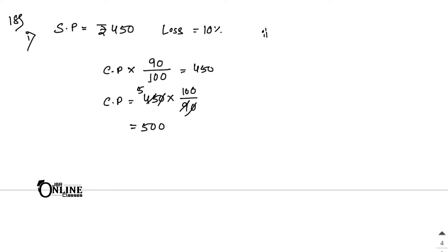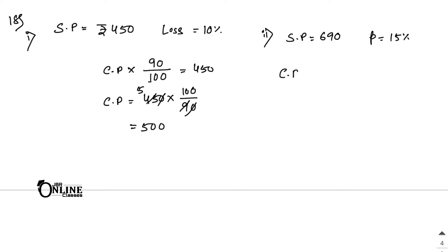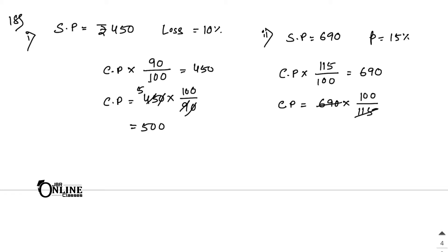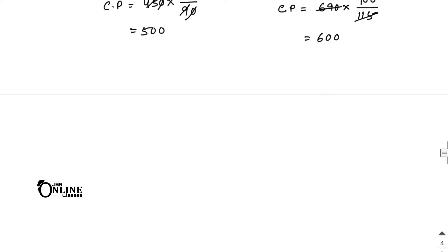Next part of sum 18: SP equals 690 and profit equals 15%. So CP into 115 by 100 equals 690, therefore CP equals 690 into 100 by 115. Dividing 690 by 115 gives 6, so CP equals 600.